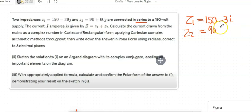I need to write down Z1, which is 150 minus 30i or j, it doesn't matter. Z2 is 90 plus 60i. Add them together and you will find the big Z, that is 240 plus 30i.